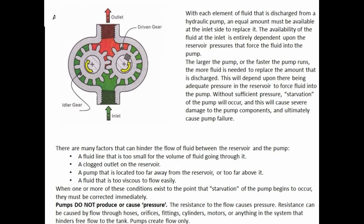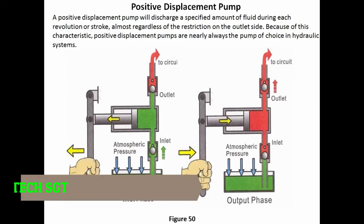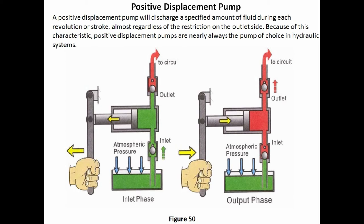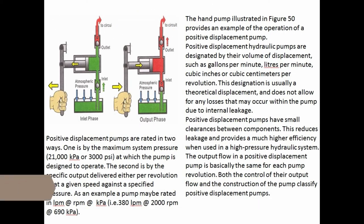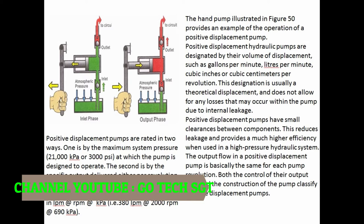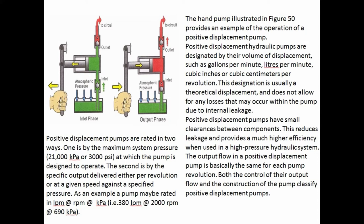A positive displacement pump will discharge a specified amount of fluid during each revolution or stroke, almost regardless of the restriction on the outlet side. Because of this characteristic, positive displacement pumps are nearly always the pump of choice in hydraulic systems. Positive displacement hydraulic pumps are designated by the volume of displacement — gallons per minute, liters per minute, cubic inches, or cubic centimeters per revolution. This designation is usually a theoretical displacement and does not allow for losses that may occur within the pump due to internal leakage.